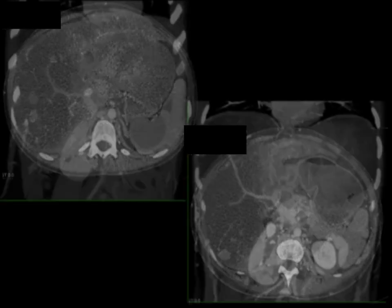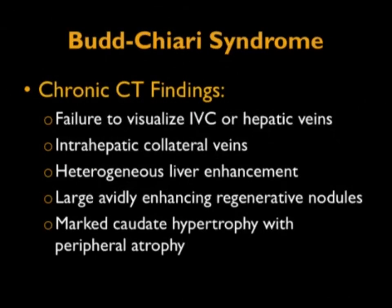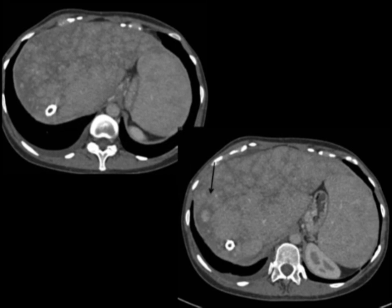You can see the right lobe again with multiple nodules. With Budd-Chiari you may see multiple too-small-to-count nodules, though that's less common. When Budd-Chiari is chronic, you may have failure to visualize the IVC or hepatic veins, intrahepatic collateral veins, heterogeneous liver enhancement with large avidly enhancing regenerating nodules, and marked caudate hypertrophy with peripheral atrophy. Here's a case with a TIPS catheter and a vascular lesion — is it a hepatoma, regenerating nodule, FNH, hemangioma? These were regenerating nodules.